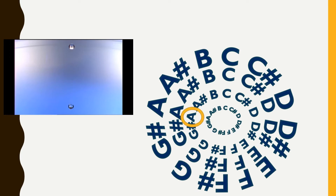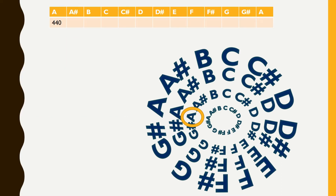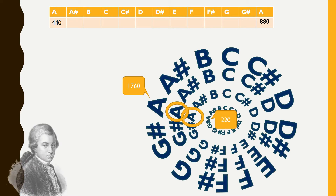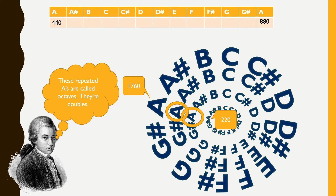We actually hear the difference in how fast those ripples are. This first A is 440 — it ripples 440 times a second, called hertz. The next A is double: 880, and the one after that is 1760, and the one before is 220. All those A's are related — they're called octaves, and they're double frequencies, twice as fast as each other. All notes of the same letter are octaves of each other. All the F's are octaves of the other F's, and the C's are all octaves of the other C's — all their frequencies are double.